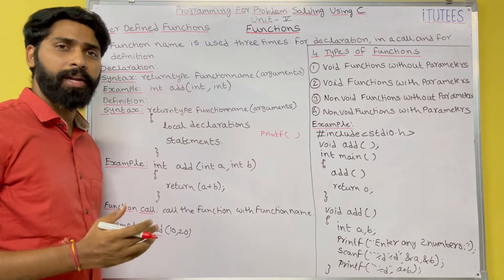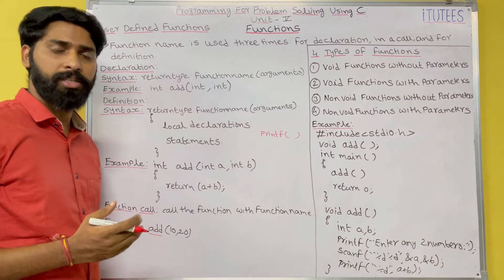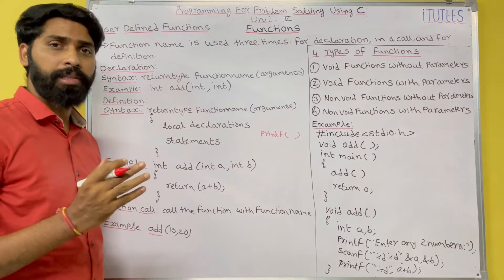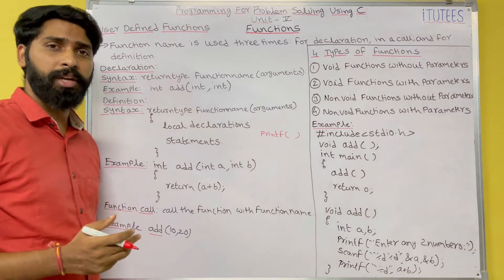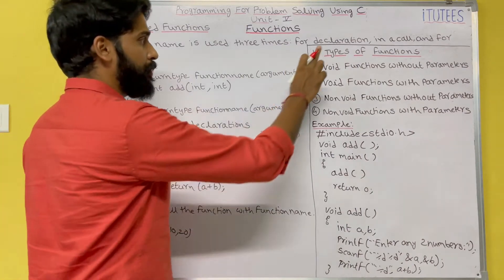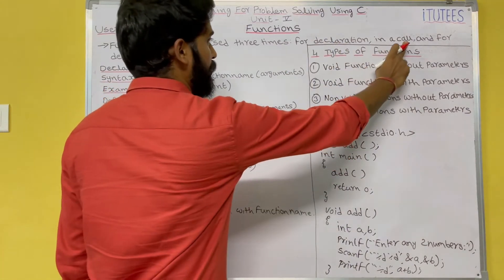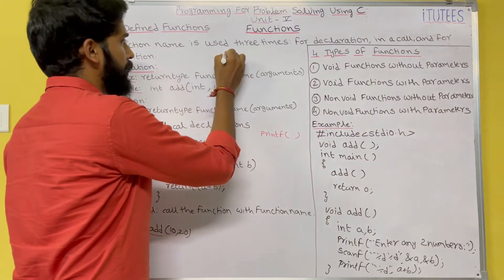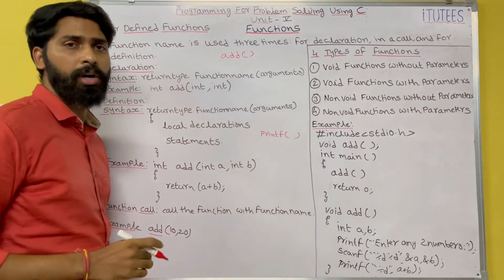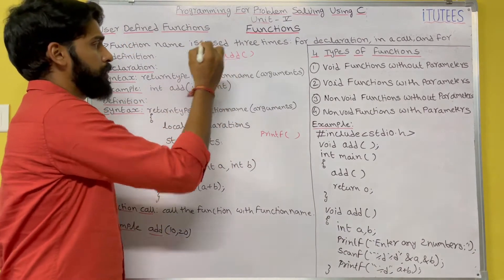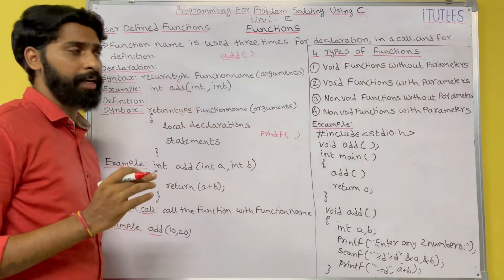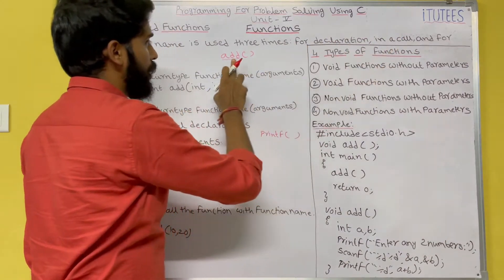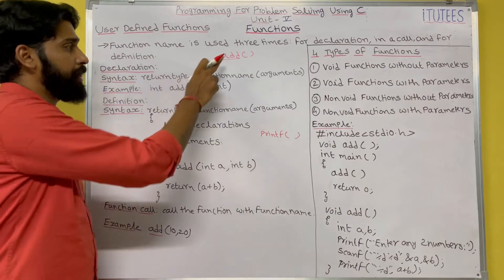In this class we are going to learn how to define user defined functions in C Programming. User defined functions consist of three parts — the user uses the function name three times: one for declaration, another for function call, and another for definition. For example, if I define a function called 'add', I use this function name three times: once for declaration, once to call it, and once to define it.